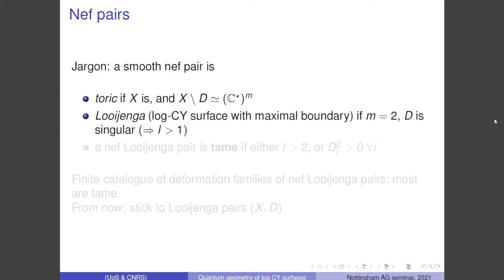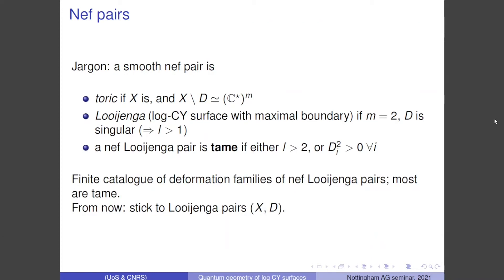Some jargon I will employ: a smooth NEF pair is toric if X is a toric variety and D is the toric boundary. It is a Looijenga pair — short for log Calabi-Yau surface with maximal boundary — if X is a surface and D is singular. I required each irreducible component of D to be smooth and NEF, so D has to have more than one irreducible component. I will call a NEF Looijenga pair tame if the number of irreducible components is either greater than two, or each irreducible component has positive self-intersection.